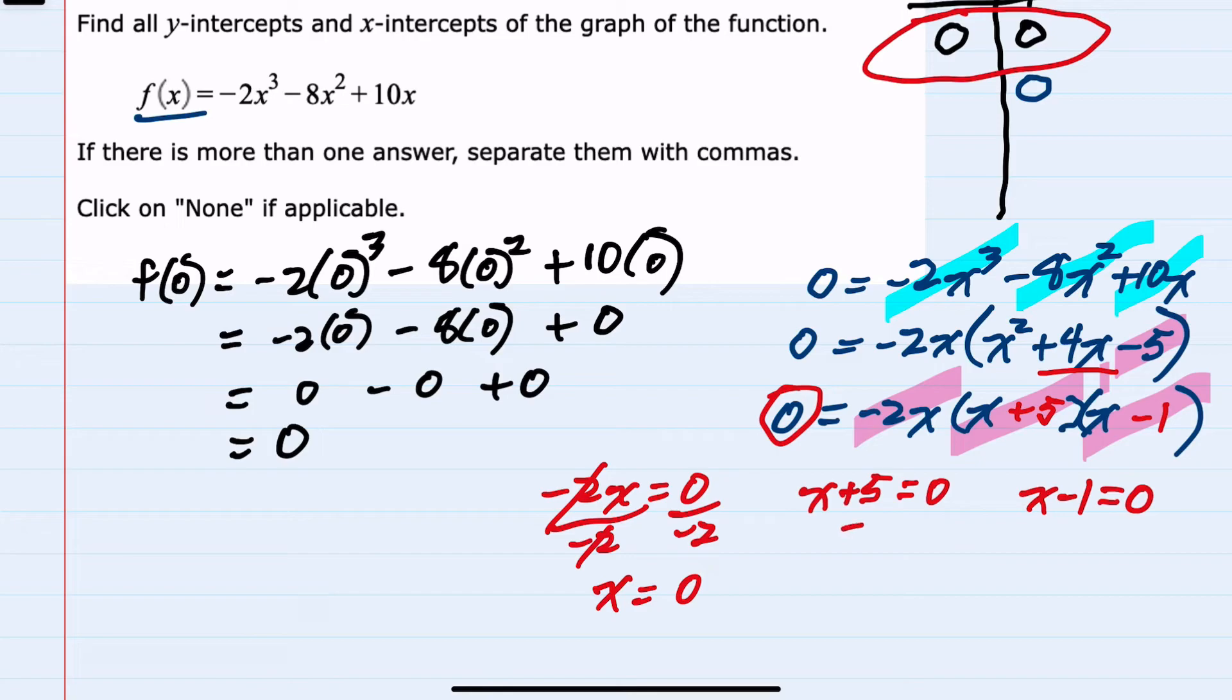For the second part when I subtract the 5 over to solve for x I get x equals negative 5. So I do have a new x-intercept here where x is negative 5 and y is zero. And for the last one I would add the 1 over to the other side giving me x equals 1. So here I have an x value of 1 and a y value of zero.